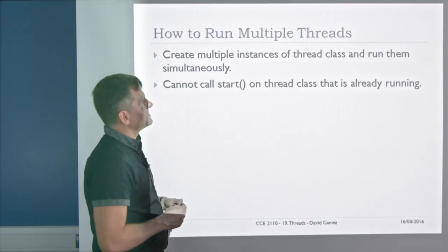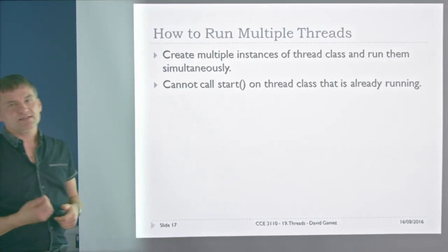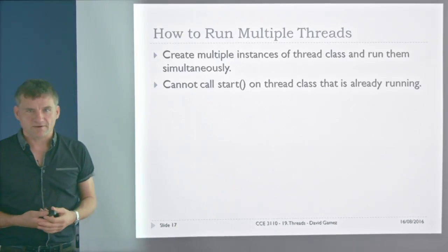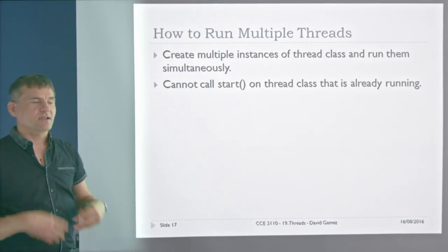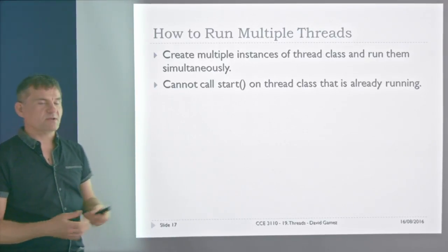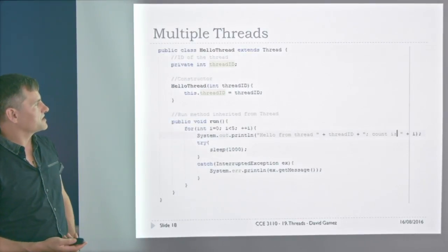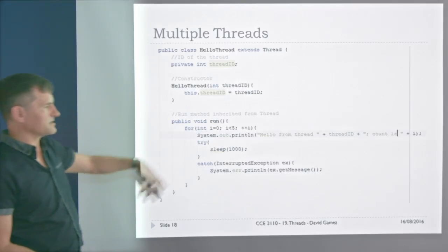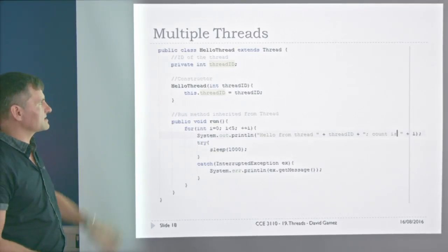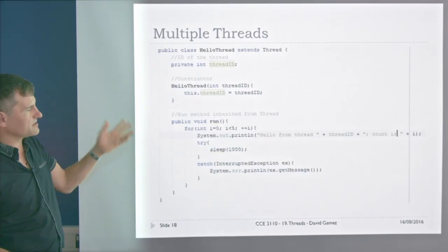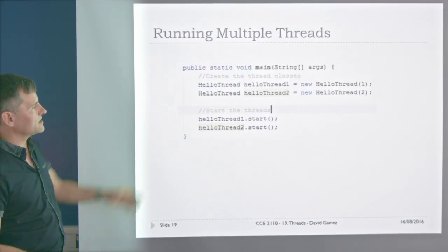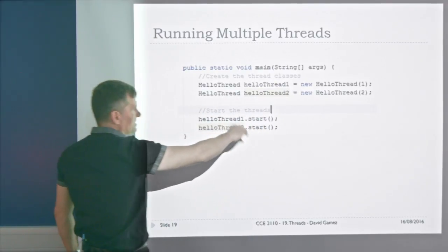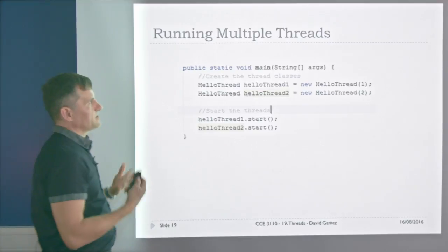To run multiple threads, you cannot start the same thread instance twice — calling start() on an already-running thread causes an error. You must create separate thread instances. For example, if you have a HelloThread class, to run two threads you create helloThread1 and helloThread2 and start them separately.